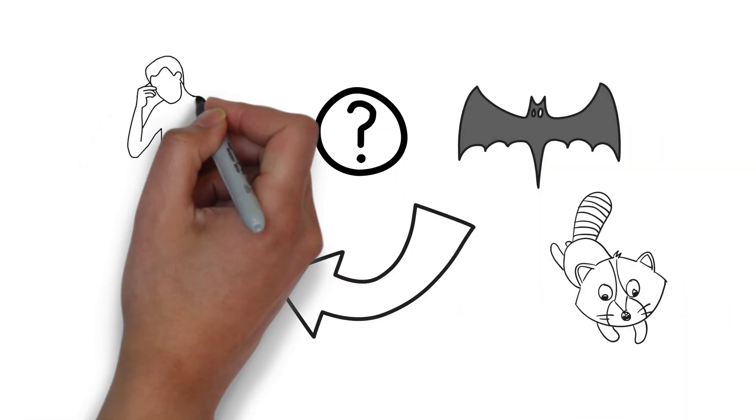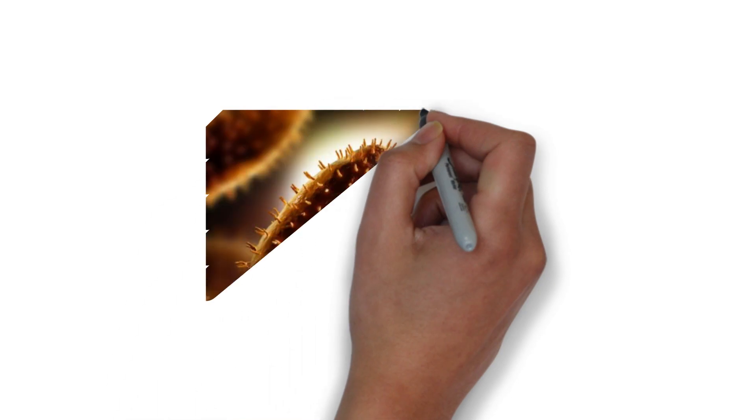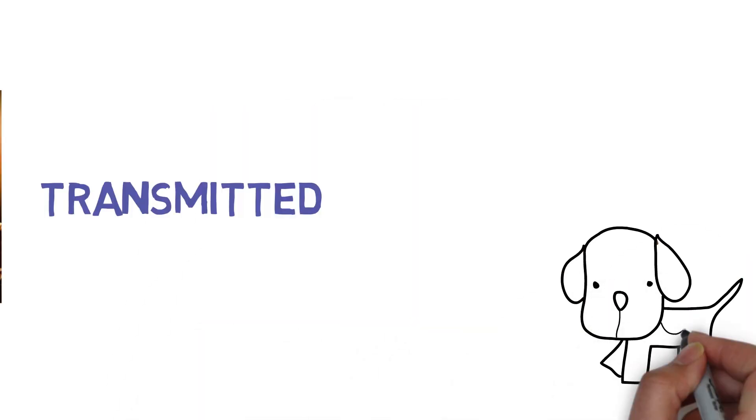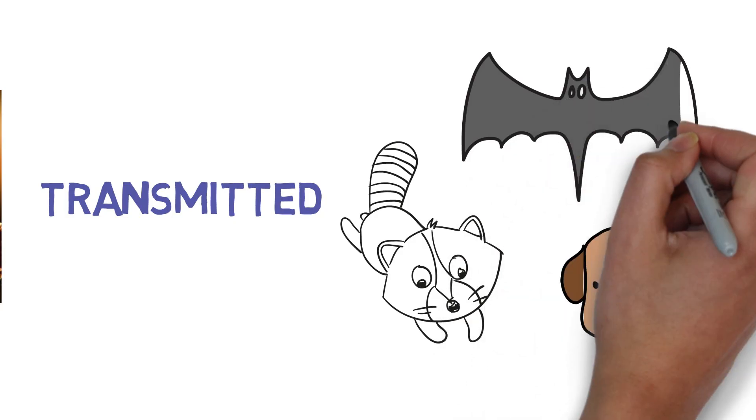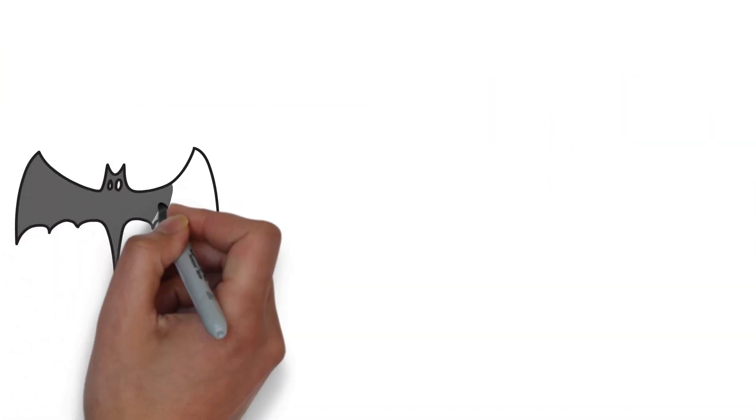So how exactly does rabies spread between people and animals? Well, the rabies virus is mainly transmitted through saliva of infected animals, such as dogs, raccoons, and bats. When the infected animal bites another animal or a human, the rabies virus enters the body through the wound.